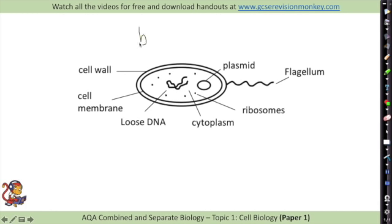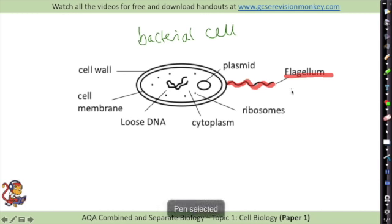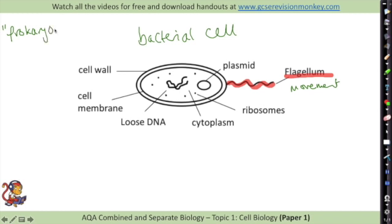The final cell that we're going to look at is a bacterial cell. You may see them with or without a flagellum - this is just for movement, and not all bacterial cells would have this. However, this is not a eukaryotic cell. This is an example of a prokaryotic cell. It's a much simpler cell and it doesn't have those structured compartments inside.